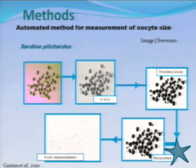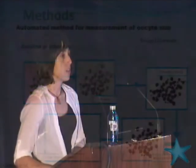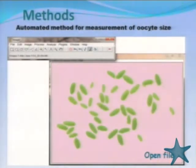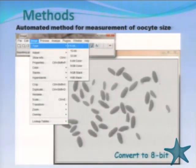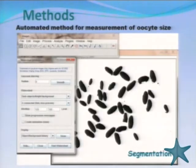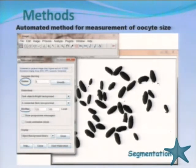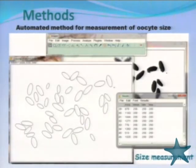We altered this automated method slightly to deal with the very specific shape of the anchovy oocytes. In detail, the method involved: opening the file in ImageJ, cleaning the background using the subtract background command, converting the image to an 8-bit black-and-white image, and then using the watershed segmentation plug-in — adjusting the radius from 8 to 12 and the watershed from 120 to 180 — to separate the oocytes and obtain oocyte size data.